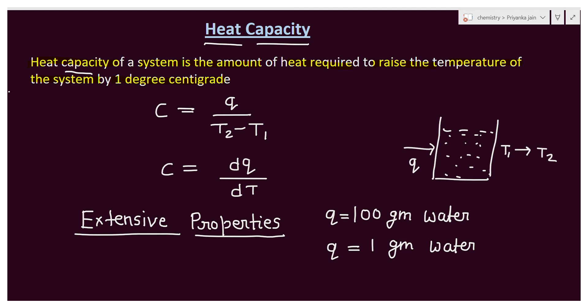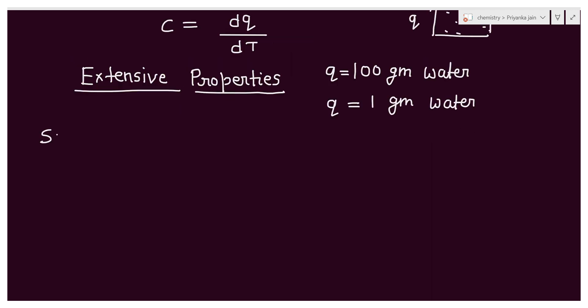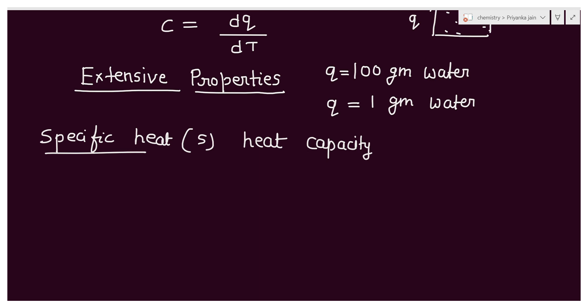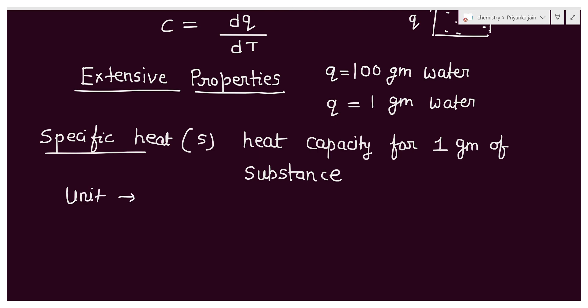If we divide this extensive property by the amount of substance, we get an intensive property. There are two types of intensive heat capacity. One is called specific heat, shown by S — it is the heat capacity for 1 gram of the substance. Its unit is Joule per Kelvin per kilogram.